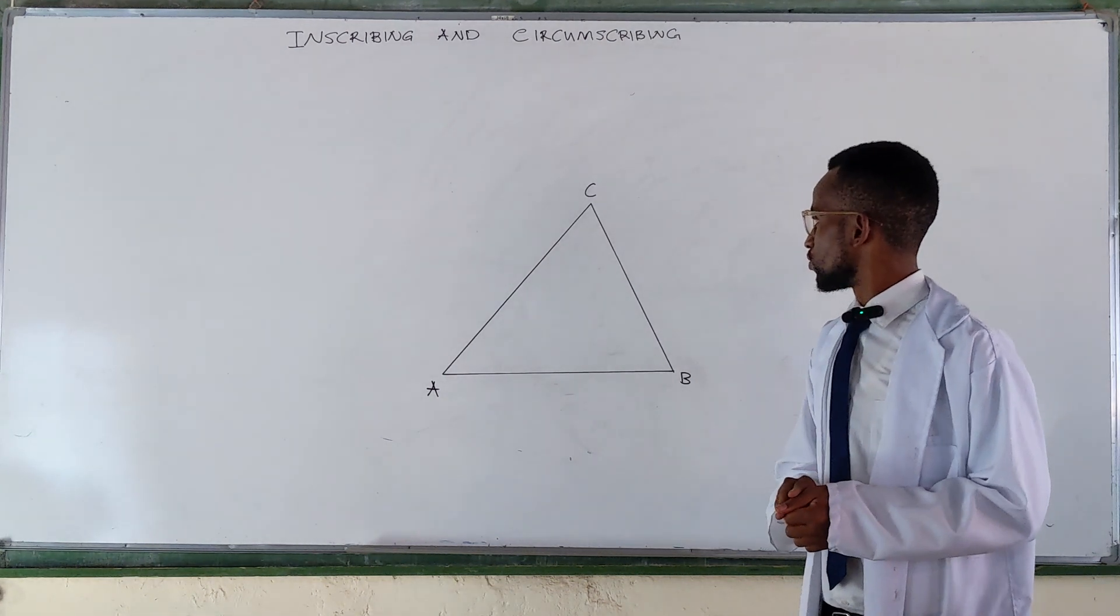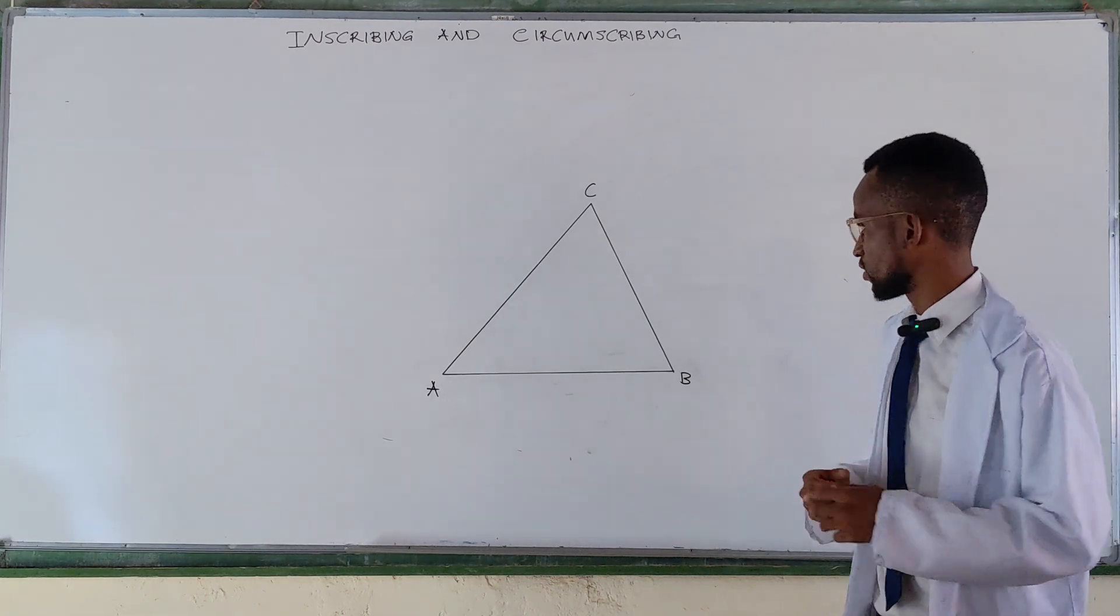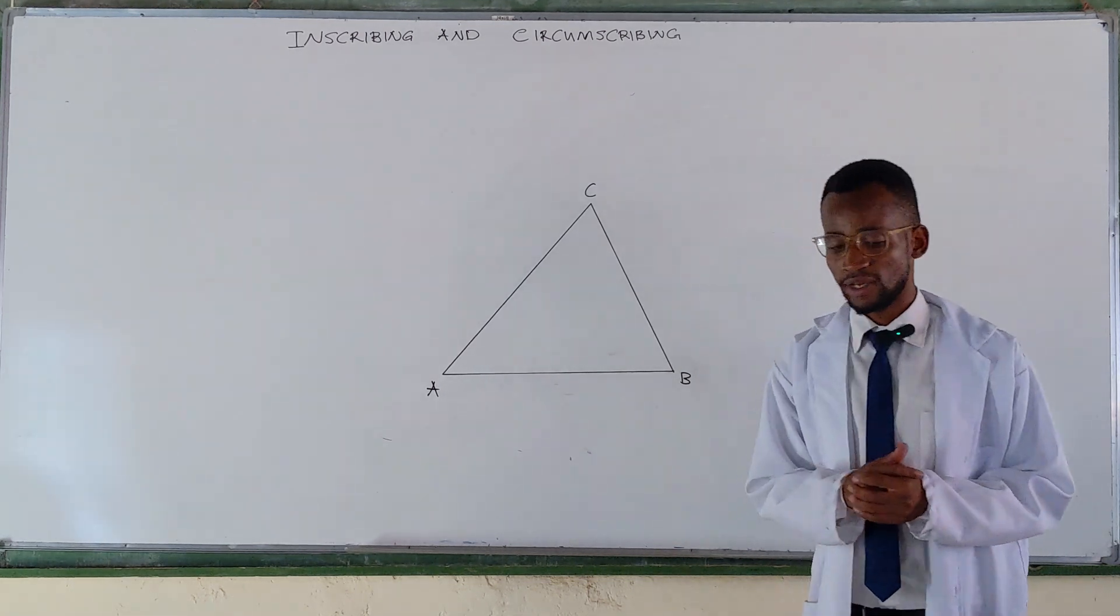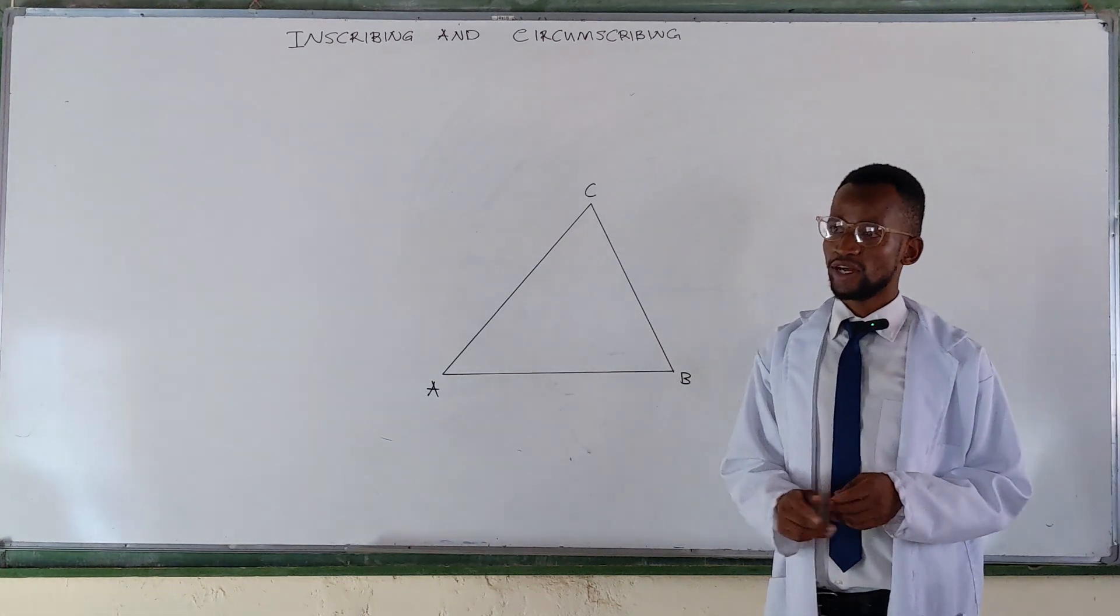So the first thing that you want to do is find the incenter. How do we find the incenter? On the previous one we were bisecting any two sides. For this one we bisect any two angles.